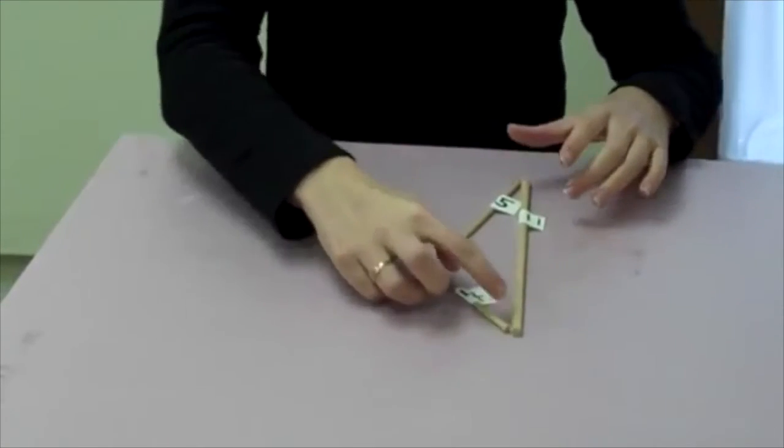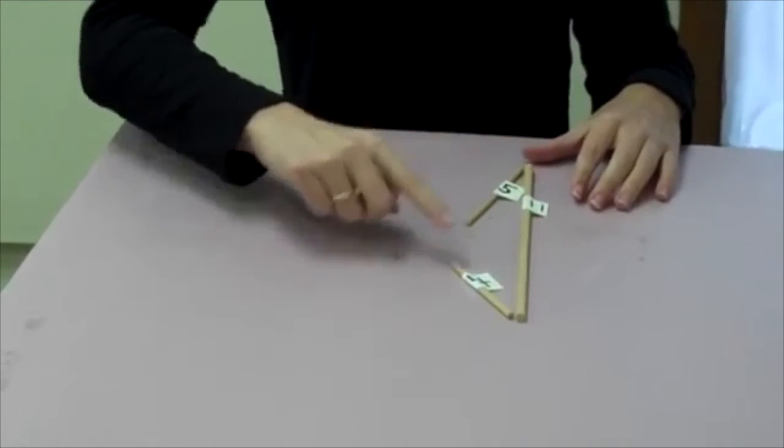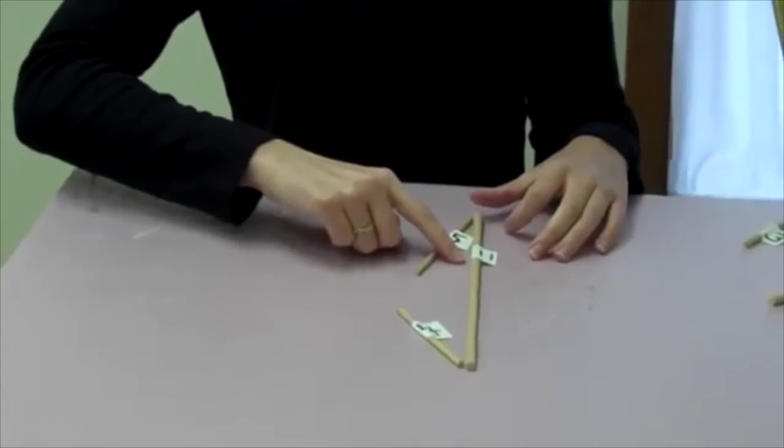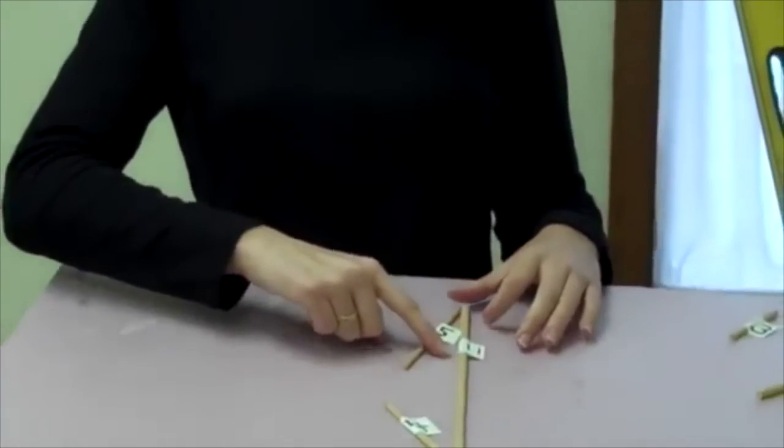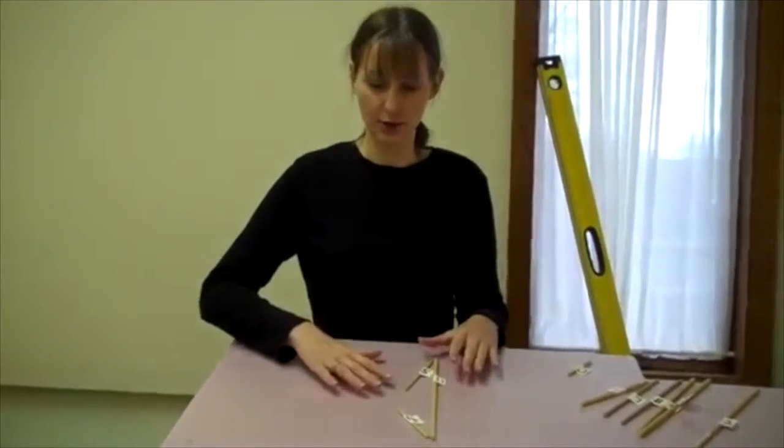No matter how small we make the angles, they're never going to meet. In this case, the sum of these two, four and five, are not larger than the measure of eleven. So you can always look at the lengths of the sides of the triangle to figure out if the triangle is going to work.